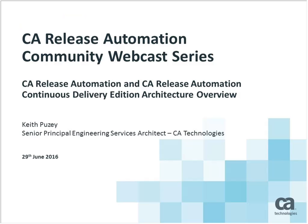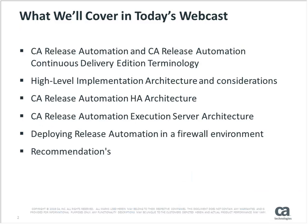Good morning, good afternoon. What we're going to talk about in the next 45 minutes or so is an overview of the architecture for Release Automation and Release Automation Continuous Delivery Edition. We'll go through the two components, how they integrate separately and how they integrate together. We'll do high-level architecture — the big picture — and then get into detail about firewall variability, execution service architecture, and we'll end with recommendations on best practices when architecting Release Automation.